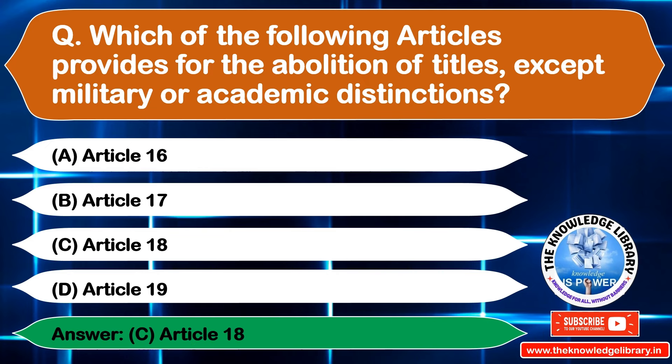The next question is: fundamental rights can be suspended during a national emergency except which articles? Option A: Article 19, Option B: Articles 20 and 21, Option C: Article 22, Option D: Article 23. The correct answer is Option B: Articles 20 and 21.